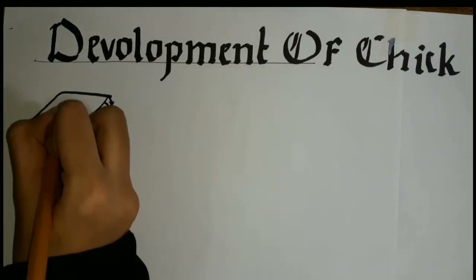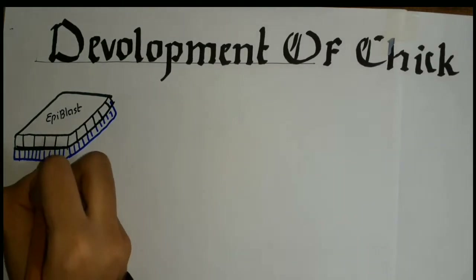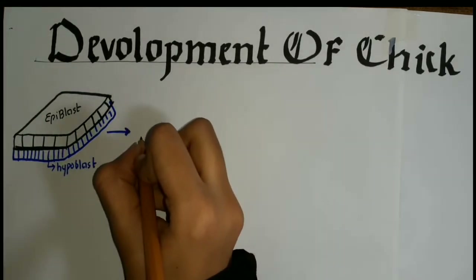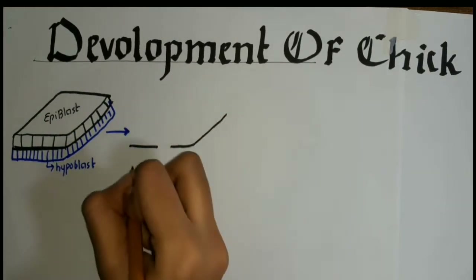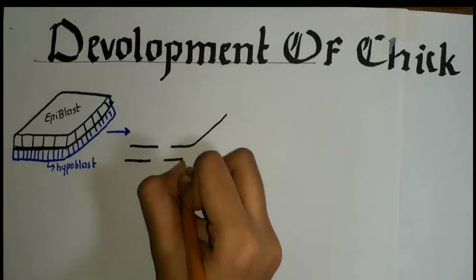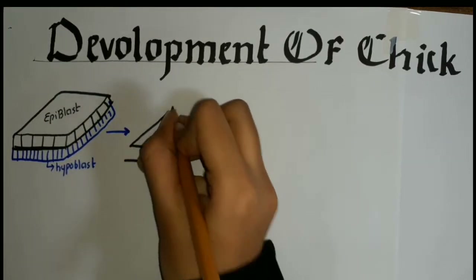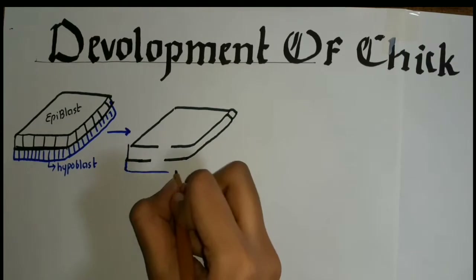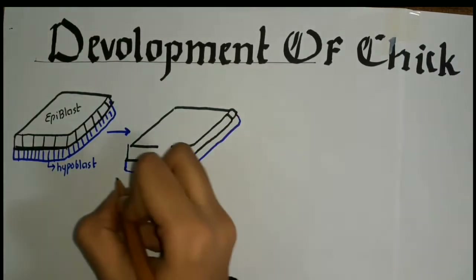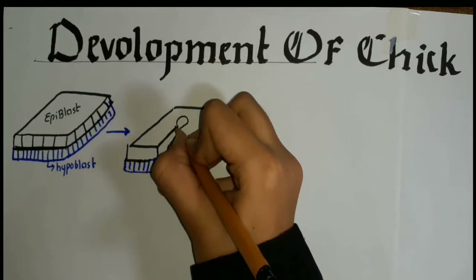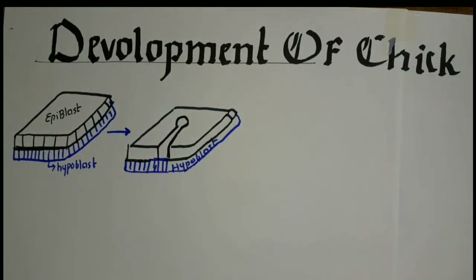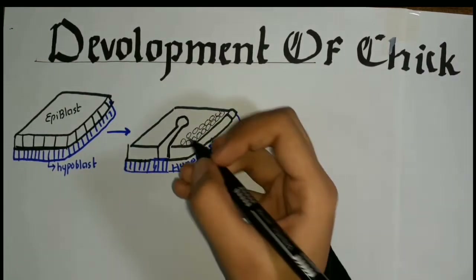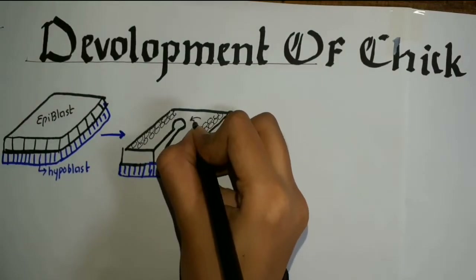I am now again drawing the epiblast and hypoblast to make the concept clear for our further discussion today. This is the epiblast and this is the hypoblast. Now we are making the primitive streak. I have told you that how the primitive streak is equivalent to the dorsal lip of the blastopore of frog, because in frog the cell moves inside by the formation of the blastopore, and in the chick, the cell moves inside by the primitive streak. What I am making now are the cells of the epiblast which will move inward to the primitive streak.